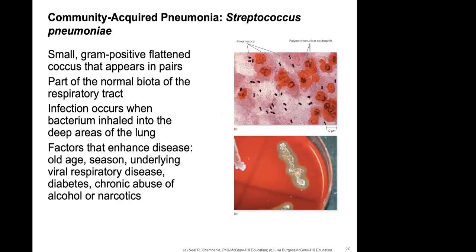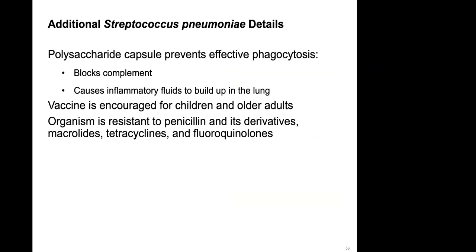Community-acquired pneumonia is caused by Streptococcus pneumoniae. Factors that enhance the disease include old age, season, underlying viral respiratory disease, diabetes, and chronic alcohol or narcotic abuse. There is a vaccine for Streptococcus pneumoniae, recommended for diabetics and patients over 65. Streptococcus pneumoniae contains a polysaccharide capsule that prevents phagocytosis, allowing it to evade the resident alveolar macrophages.